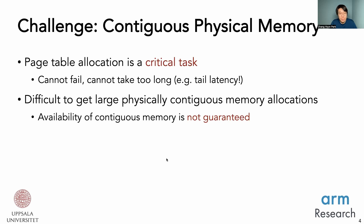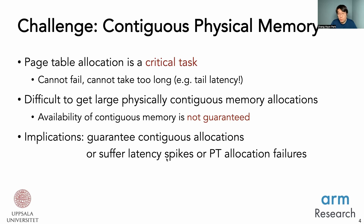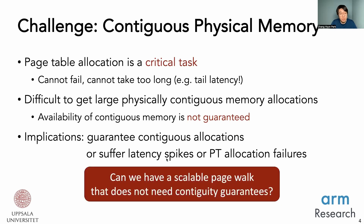We need to remember that page table allocation is a critical task, which means it cannot fail and it cannot take too long. If it does, it might incur tail latency or system non-responsiveness. It is difficult to get large contiguous physical memory allocations, and especially when this allocation is not guaranteed, it is even more problematic for such a critical task. The implication is either guarantee this through reservation or suffer latency spikes or page table allocation failures. Our question was: can we have a scalable page walk that does not need contiguity guarantees?